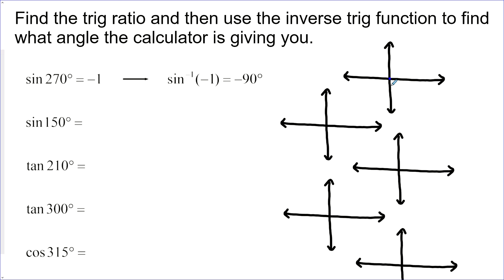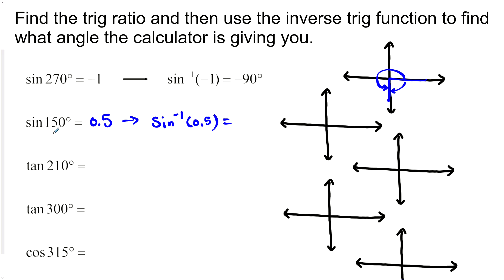I'll graph that so we can visually see what's happening. 270° looks like this, but the calculator gave back negative 90°. The next example: sine(150°) gives 0.5, and sine⁻¹(0.5) gives 30°, not 150°. We'll pause the video here, finish the rest of these examples, and look for the pattern — what the calculator is programmed to give you.